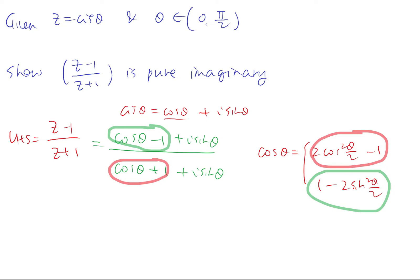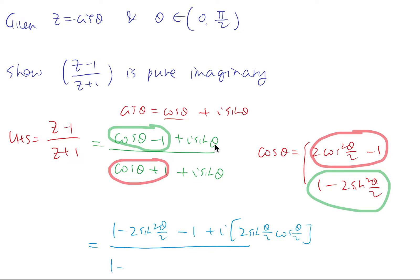So I'll just quickly do a substitution and plug them back in. This would be 1 minus 2 sine squared (θ/2) minus 1 plus i — and then the double angle formula for sine is just 2 sine(θ/2) cos(θ/2) — so this is 1 minus 2 cos squared (θ/2) minus 1 plus 1 plus i times 2 sine(θ/2) cos(θ/2).